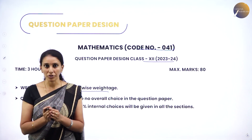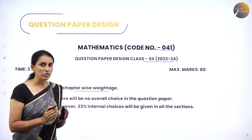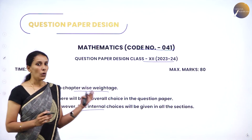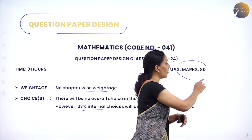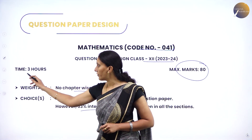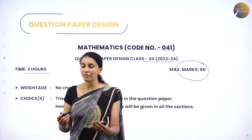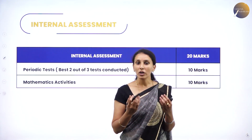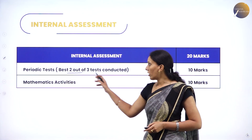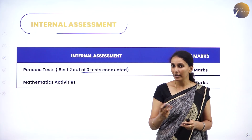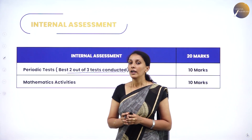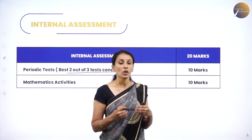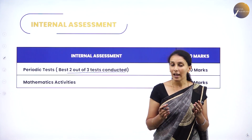Regarding internal choices in the question paper, there are no internal choices for every individual question, but approximately 33% internal choices are provided across all sections. The overall question paper is for a maximum of 80 marks and the time allotted is 3 hours. For internal assessment, periodic tests will be conducted — 3 periodic tests in total, and the best 2 will be chosen to award you 10 marks.